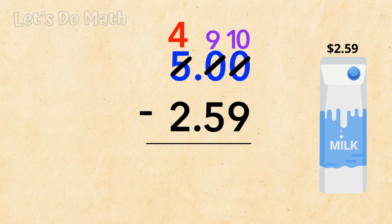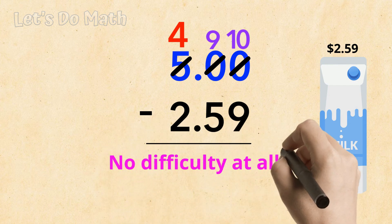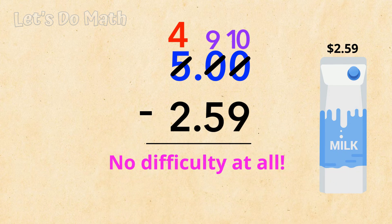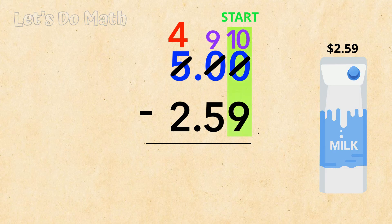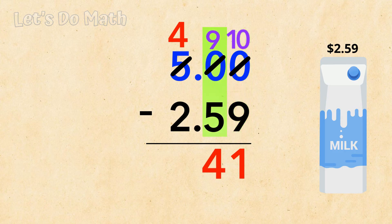And as you can see, now we've done it, we've got no difficulty here at all. So starting on the right just like always, 10 minus 9 is 1. Next we have 9 minus 5, that's 4.